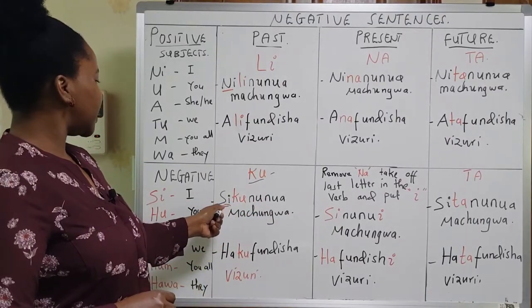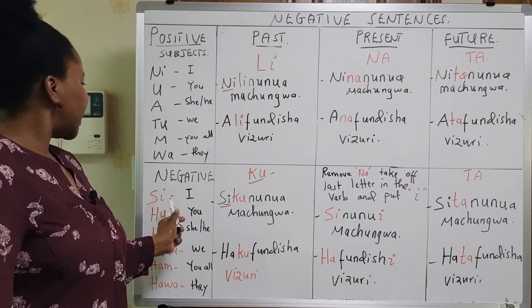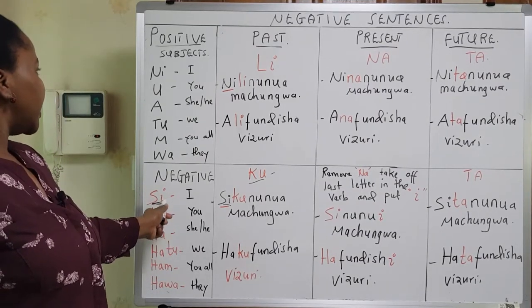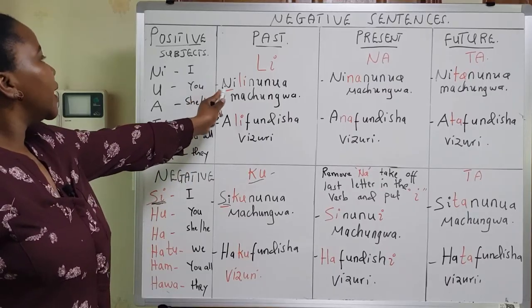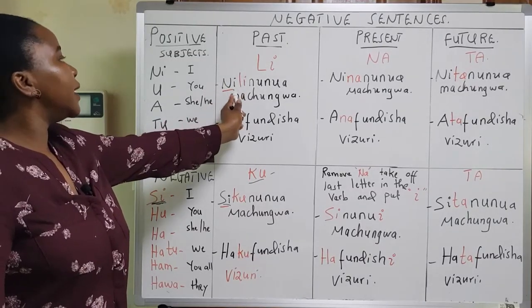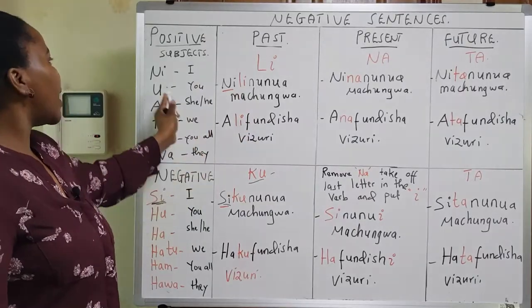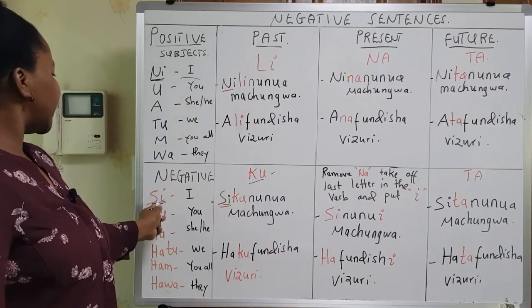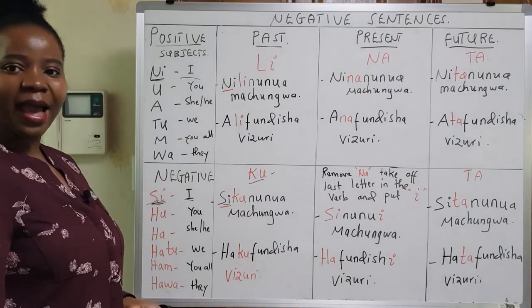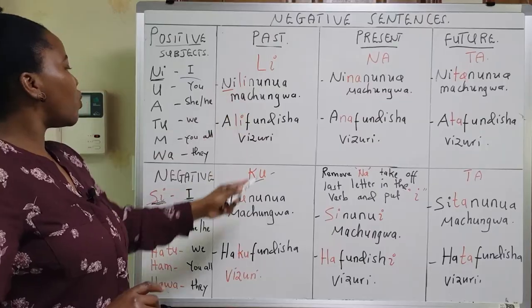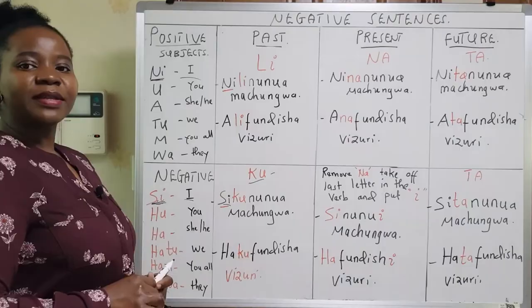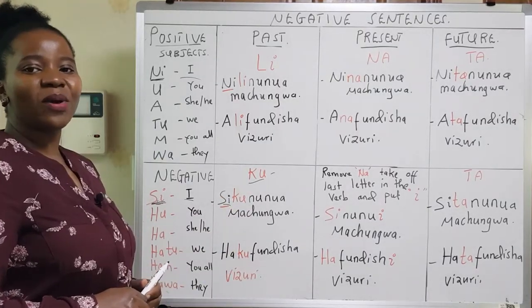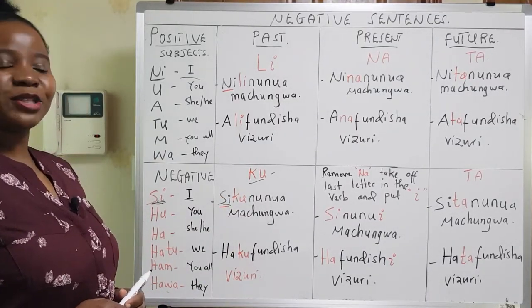Why do we use si? We use si because in the positive sentence ni stands to represent I, and si also stands to represent I but in the negative form. So nilinunua machungwa becomes sikunuua machungwa, meaning 'I didn't buy some oranges.'